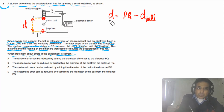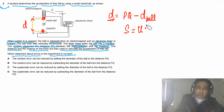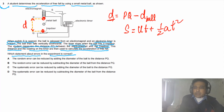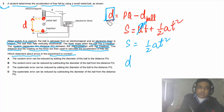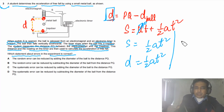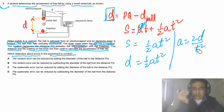Using the formula s = ut + ½at², and since the ball starts from rest (u = 0), this simplifies to s = ½at². Here s equals d (the corrected distance), so d = ½at². Rearranging gives a = 2d/t². This is the equation used to calculate the acceleration of free fall from the experiment.